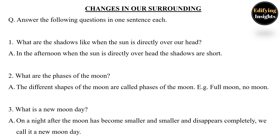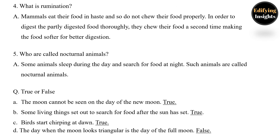Question 3: What is a new moon day? Answer: On a night after the moon has become smaller and smaller and disappears completely, we call it a new moon day. Question 4: What is rumination? Answer: Mammals eat their food in haste and do not chew properly; to digest the partly digested food thoroughly, they chew their food a second time — making it softer for better digestion. Question 5: Who are nocturnal animals? Answer: Some animals sleep during the day and search for food at night — such animals are called nocturnal animals.